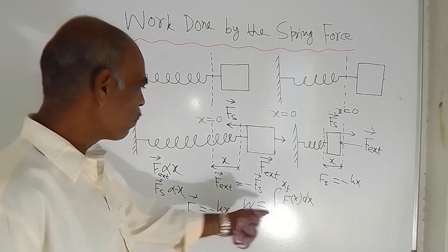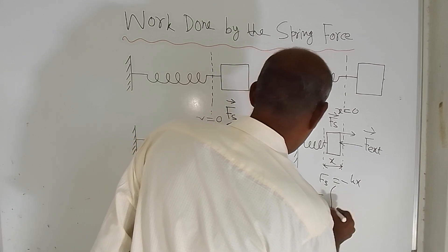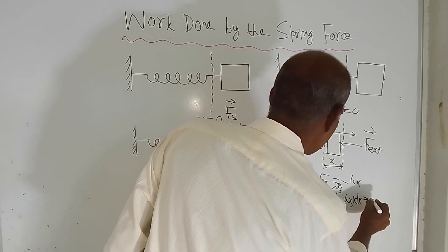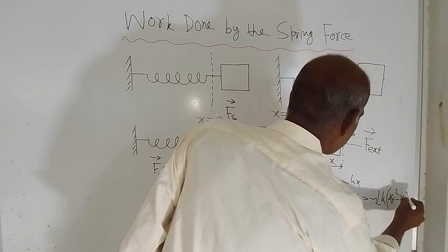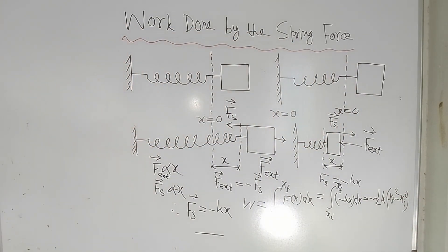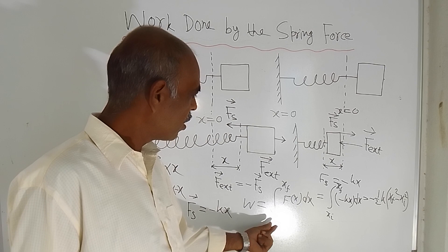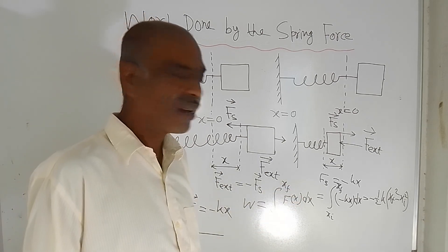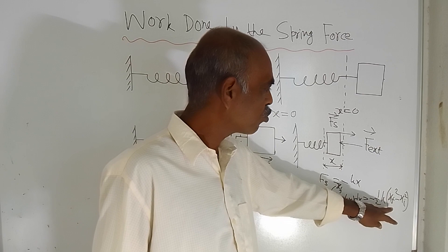If you replace F(x) with −Kx, the limits go from Xi to Xf, and you integrate −Kx dx. The result is: W = −½k(Xf² − Xi²). This is the formula for work done by the spring force using the variable force integration method.